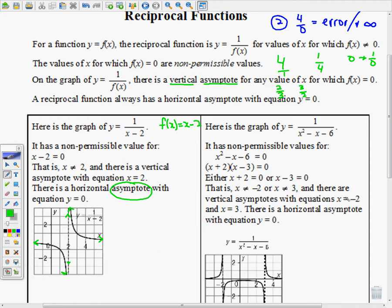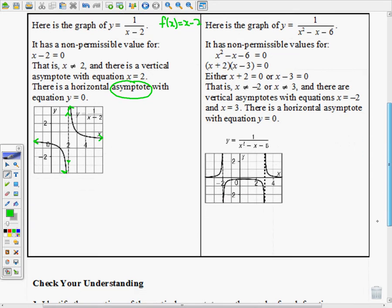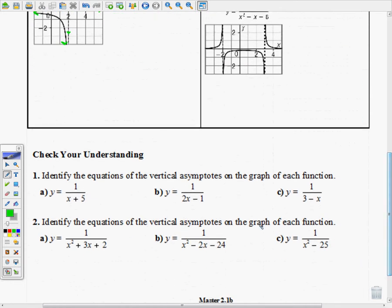Let's take a look at our first example. You'll check your understanding. Identify the equations of the vertical asymptotes on the graph of each function. Really what they're asking is when is the denominator equal to zero? So the answer is x = -5. That means that if we were to graph this, we're going to have a vertical asymptote where x = -5.